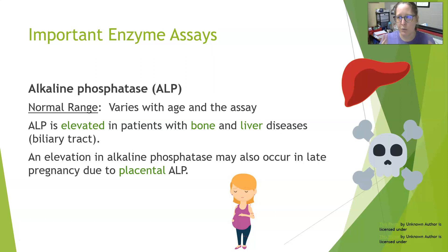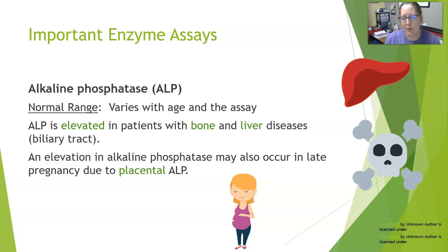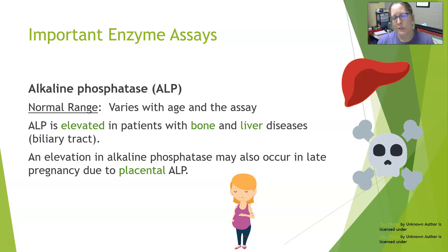Alkaline phosphatase has a normal range that varies with age and the assay used. It is elevated in patients with bone and liver diseases, as those are its two primary origins. In liver disease, it is contained in the biliary tract — the lining cells of the bile canals. It can also be elevated in late pregnancy because the placenta contains alkaline phosphatase and the fetus is developing bones. If alkaline phosphatase is elevated but AST and ALT are normal, the origin is more likely bone rather than liver.